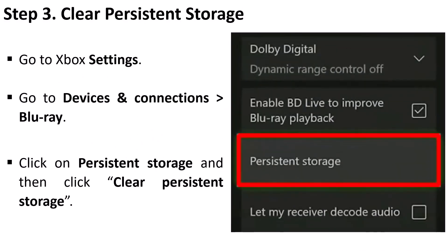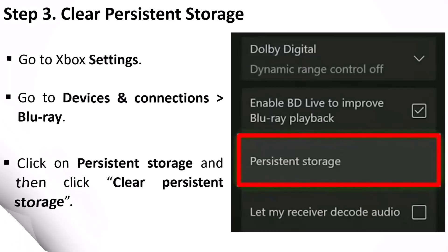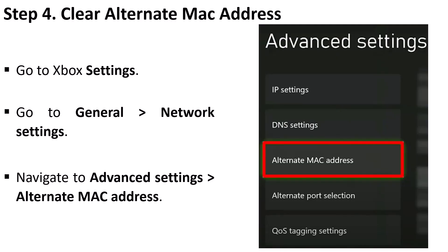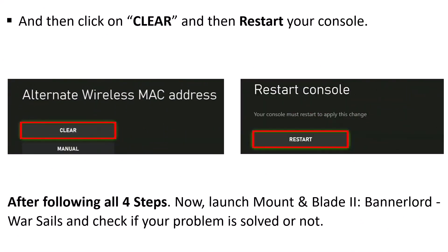Make sure you click Delete from Console when deleting it. Step three is to clear persistent storage: go to Xbox Settings, go to Devices and Connections, Blu-ray, click on Persistent Storage, and then click Clear Persistent Storage. If you don't see this feature on your Xbox, skip this step. Step four is to clear the alternate MAC address: go to Xbox Settings, General, Network Settings, Advanced Settings, Alternate MAC Address, click Clear, then restart your console. After following all four steps, launch the game and check if your problem is solved.